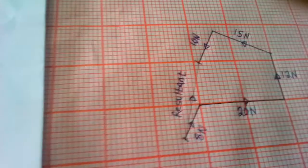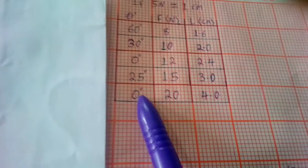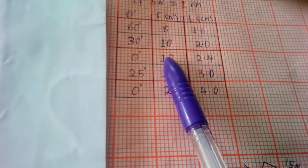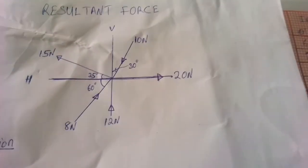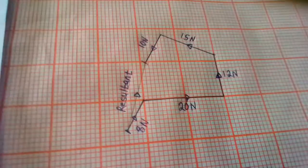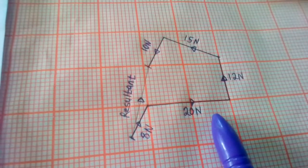We should now be transferring these lengths into our sketch. I have already obtained the diagram here but I am going to explain how I have done this. For the first force which is the 20 Newton, it is always advisable to start from the one with zero angle. I am starting from the 20 Newton since it is horizontal. That is why I have a horizontal line here indicating 20 Newton.